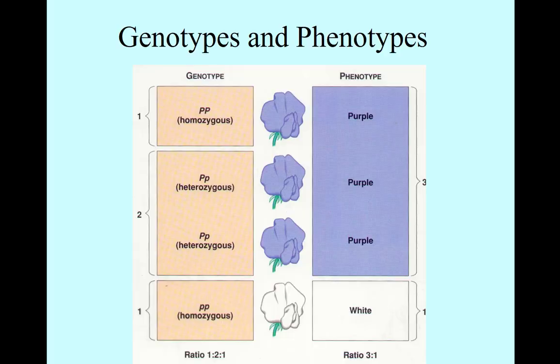There are a few more terms you need to know to understand basic genetics: genotypes and phenotypes. Genotypes are the types of alleles you get from your parents. Large P is the dominant allele, and little p is the recessive allele.